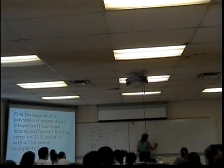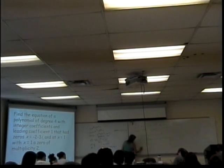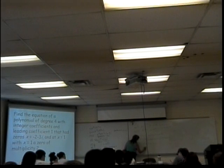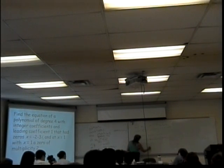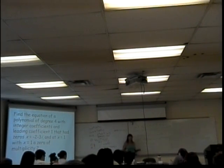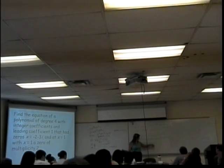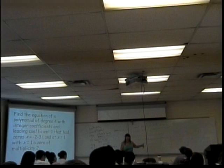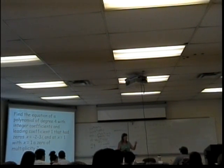What is i squared equal to? Negative 1. So minus 9i squared becomes minus 9 times negative 1, which is plus 9. So the result is x squared plus 4x plus 13. If you look at the answer key it may say x squared plus 4x plus 4 plus 9, without adding them together, depending on how they wrote the answers.